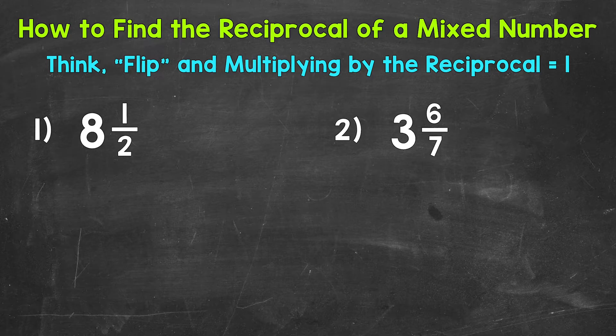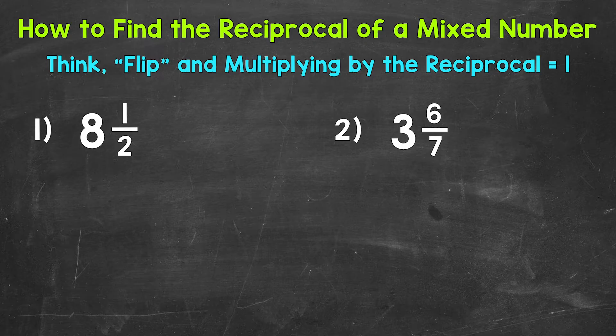Let's jump into our examples, starting with number 1, where we have 8 and a half, and we're going to find the reciprocal. The first thing that we need to do is to write our mixed number as an improper fraction, so that we just have a numerator and a denominator. Once we have an improper fraction, we can flip it to get the reciprocal.